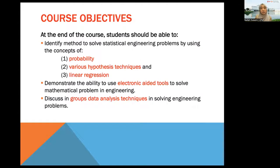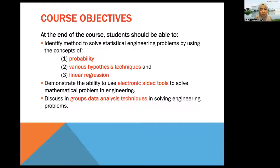At the end of this course, students should be able to identify methods to solve statistical engineering problems using concepts of probability, hypothesis techniques, and linear regression - these are the three main topics. Students should also be able to use electronic-aided tools like Excel, R, and Python to solve mathematical problems in engineering. We'll mostly use Excel since this is first year. You'll also discuss data analysis techniques in groups as part of your group project.